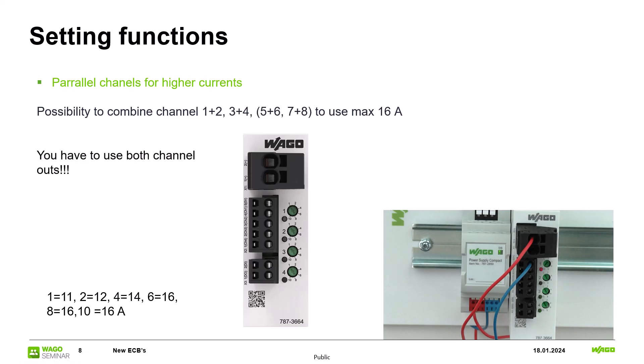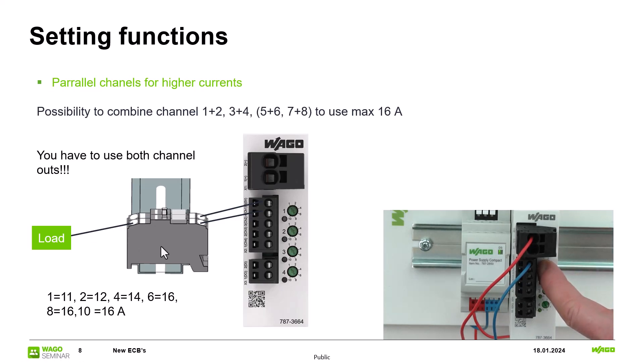Important to know is that you have to use both channel outputs. So please go with the conductor to a terminal block where the jumper is located and then go with only one conductor to your load. If you press channel number 1 again for at least 3 seconds you deactivate the parallel mode and you can activate the channels by yourself again.